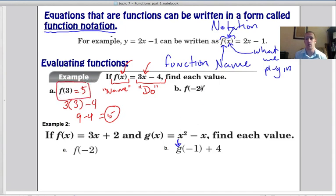Plug in a negative 2. So that's going to be 3 times whatever we plug in minus 4. So we're plugging in a negative 2. So 3 times negative 2, and you just crunch the numbers. So f(-2) = -10.